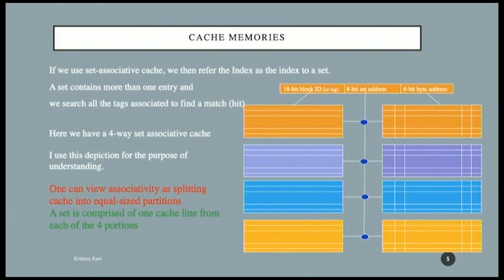Nowadays we have set-associative cache, which means an index identifies a number of cache lines called a set — in this example, four. One index identifies four lines, so your data may be in one of four locations. We use a certain number of bits so that we can use modular arithmetic, keeping hardware simple. Because any address uses the same mechanism, an attacker can evict the victim's data. By evicting, you can find out if the attacker has the same index bits as the victim, and based on that, you can exploit.